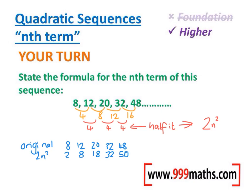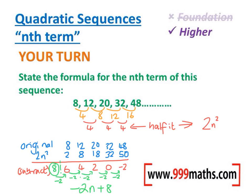Now do the original take away 2n squared, or top row, take away, bottom row. And then finally do normal nth term on what you've got left, which is minus 2n add 8. Put the two parts of your answer together, and we've finished. 2n squared minus 2n add 8.